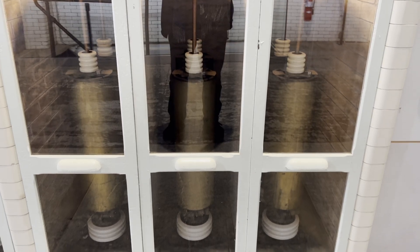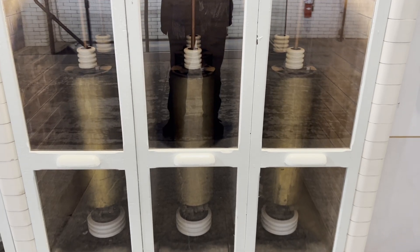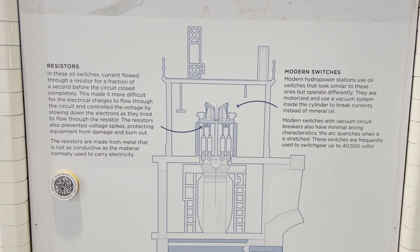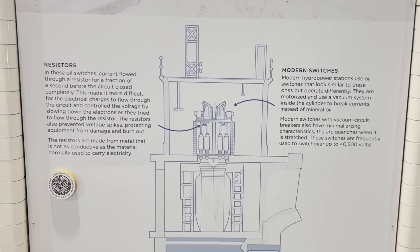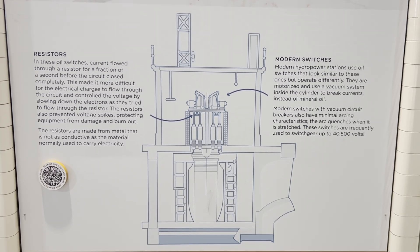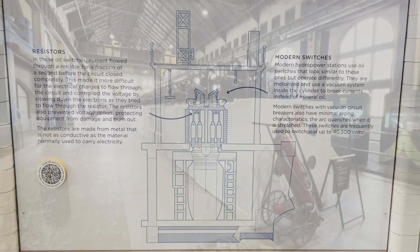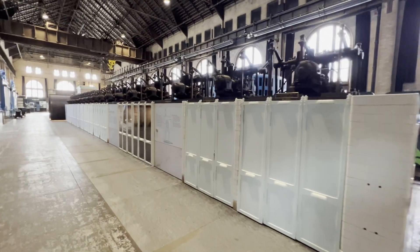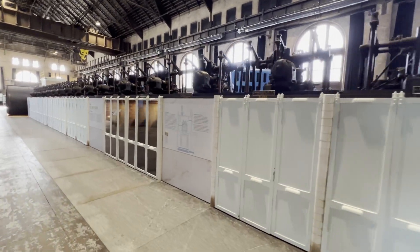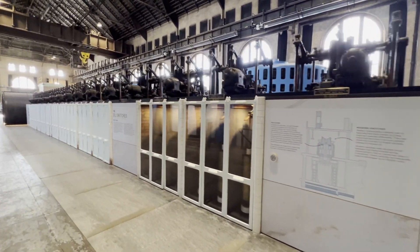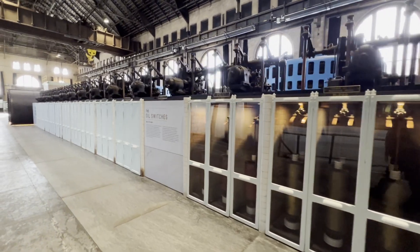Electric arcs caused by opening the switches were suffocated by the oil in the cylinder. Extinguishing electric arcs was critical to avoid a flammable or explosive combination of fuel and air. Modern hydro stations use oil switches that look similar but operate differently — they use a vacuum system instead of a cylinder and mineral oil. Modern vacuum circuit breakers are frequently used to switch gear up to 40,500 volts.